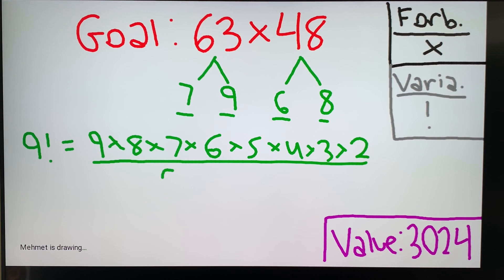By doing these divisions, we will eliminate 5, 4, 3, and 2, because we're dividing. And we're left with 9 times 8 times 7 times 6, which is equal to 3,024, and that is our goal.